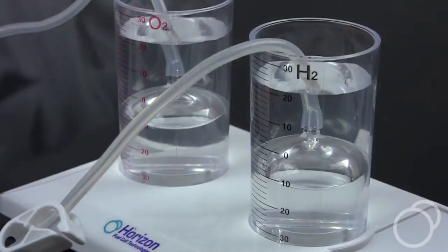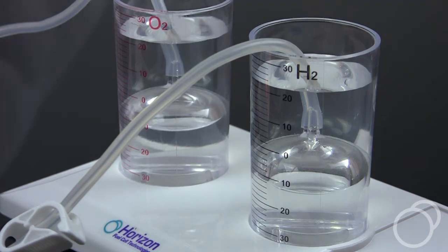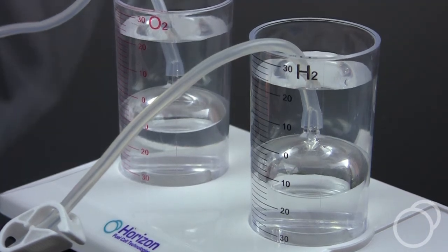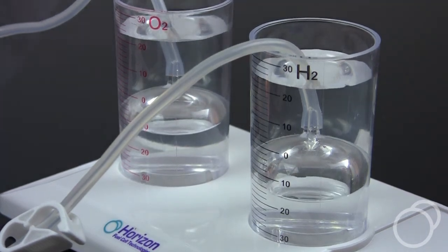Milliliter markings on the sides of the cylinders let students measure how much gas is being produced by observing the displacement of the water.